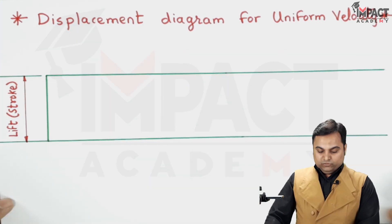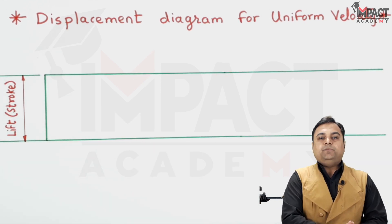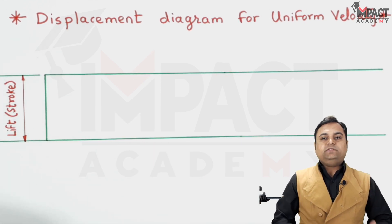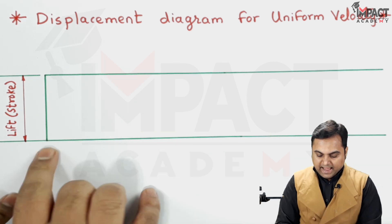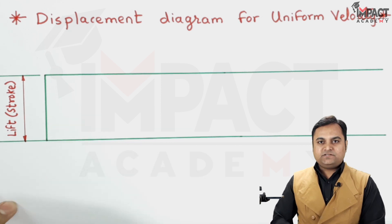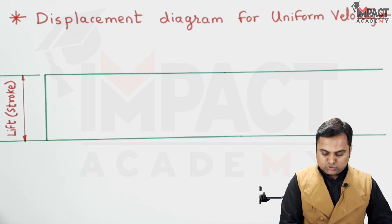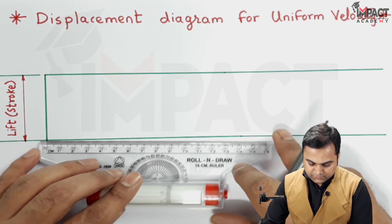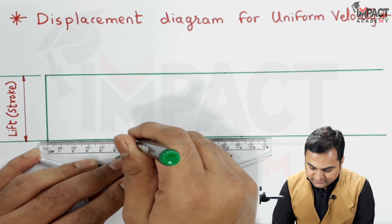So here is the lift or stroke of the follower. Next I would be assuming the outstroke or the angle of ascent, also called as the upward motion of the follower. Angle of ascent also means the angle turned by the cam, also called as the outstroke. So here I am again taking it as 6 centimeters.